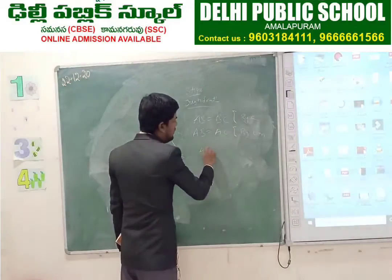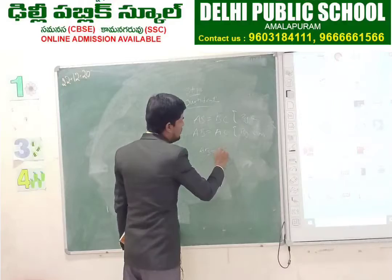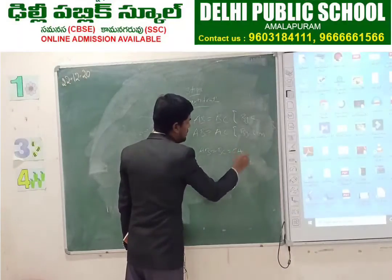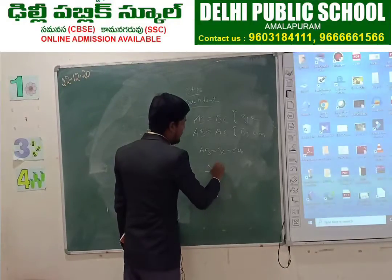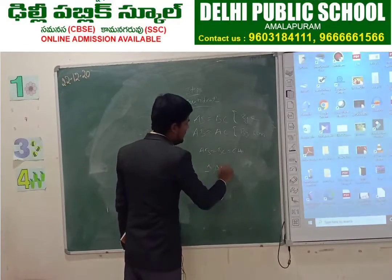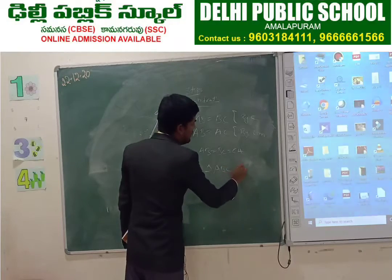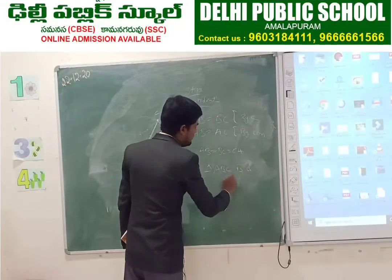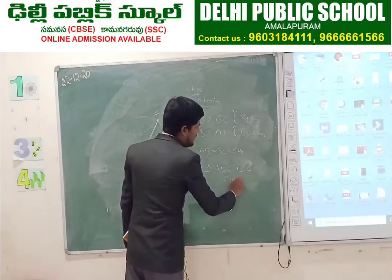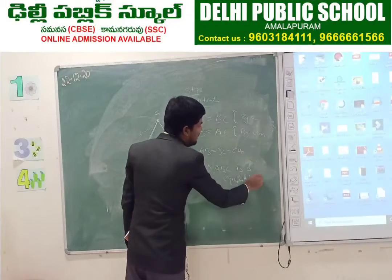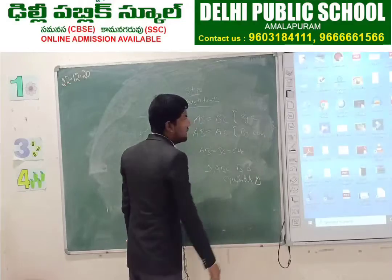Therefore, AB is equal to BC is equal to CA. This means triangle ABC is an equilateral triangle.